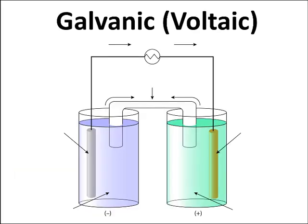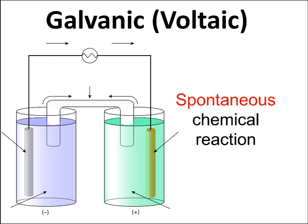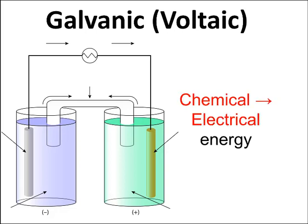In contrast, in a voltaic or galvanic cell, you have a spontaneous chemical reaction, so the chemicals react by themselves. And as they do so, their chemical energy is converted into electrical energy because we have wires completing an external circuit between the points where the reactions are spontaneously happening.